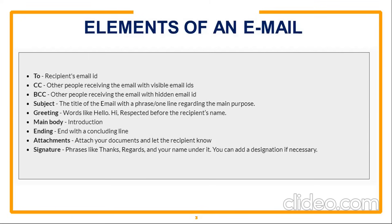Then the main body — you have the introduction. Begin with some introduction and with a concluding line. Then there's a symbol of attachment where you can attach a document. If you click on the symbol of attachment, that will take you to the source file wherever the file is in your system and it will get attached. Then there is a signature. You need to sign — though we can also attach a digital signature. Before that, we need to mention the salutation like: thanks, regards, best regards, kind regards — and your name under it. You can also add your designation like coordinator, HR manager, then your name.